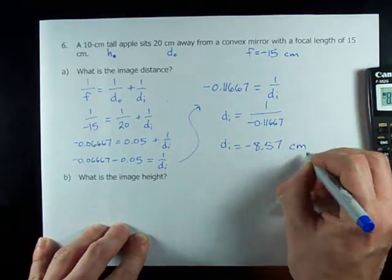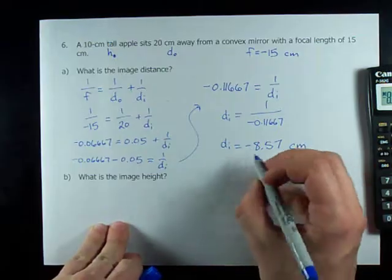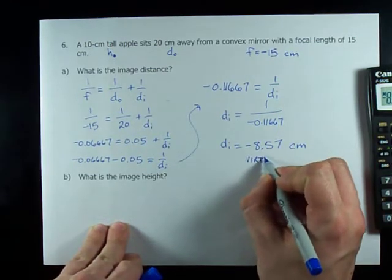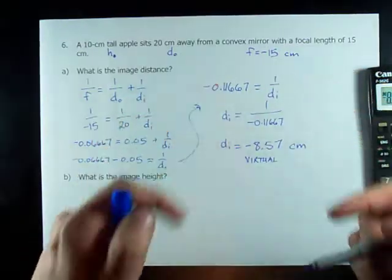So the image itself is 8.57 centimeters behind the mirror. They didn't ask, but FYI, a negative image distance means virtual image. Remember that.